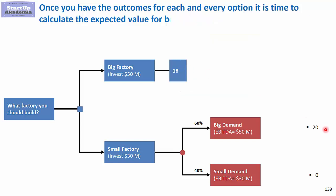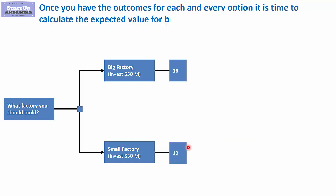We do exactly the same with the small factory: we multiply 20 by 60% and 0 by 40%, and from this we get the expected value of 12 million.